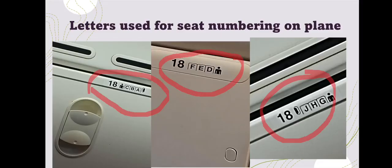You can see in this picture which I have taken during an international flight. I is missing because these letters can be confused with numerals — I can be confused with 1, S can be confused with 5, and Z with 2.